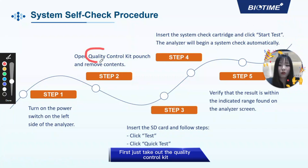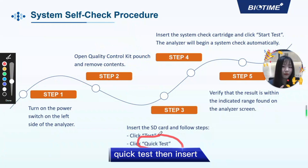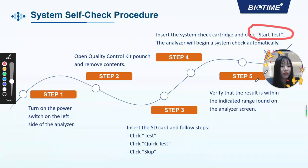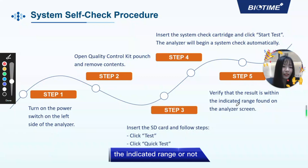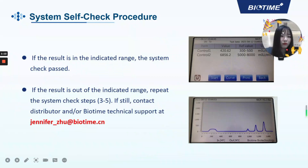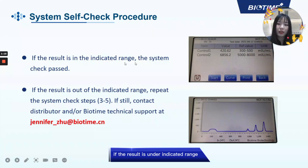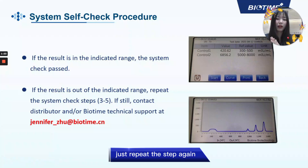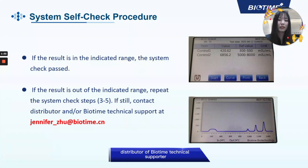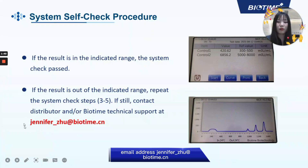First, take out the quality control kit and insert the SD card into the machine, then click Quick Test. Then insert the reagent into the machine and click Start Test. Then verify whether the result is within the indicated range. If the result is within the indicated range, the system check will pass. If the result is out of the indicated range, just repeat the steps again. If still out of range, you can contact your distributor or BioTran technical support. You can contact me at JenniferJu@BioTran.com.